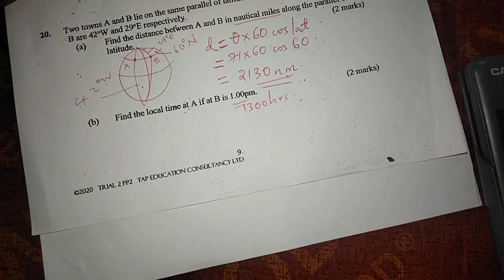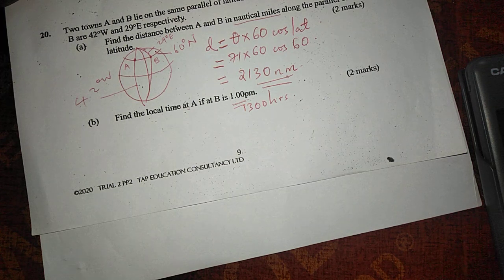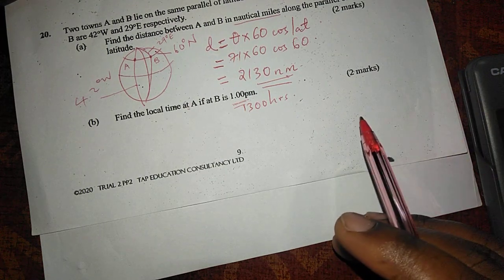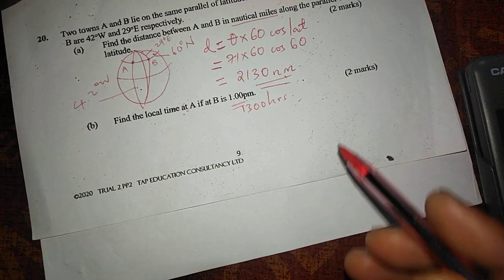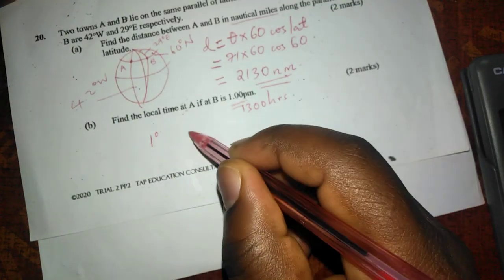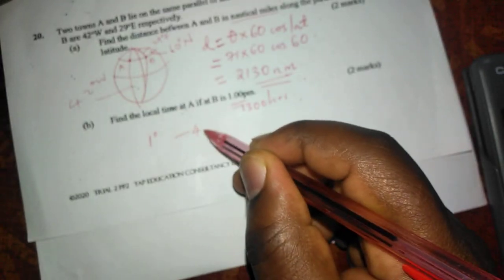And there is what we call time difference when places lie in different longitudes because places in the east are ahead in time of the places in the west. Therefore, we know that for every longitude difference, we have a time difference of 4 minutes.